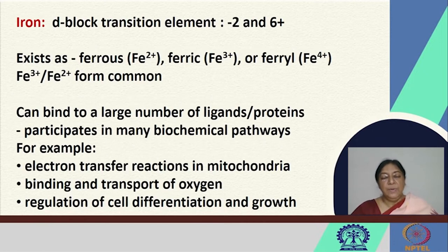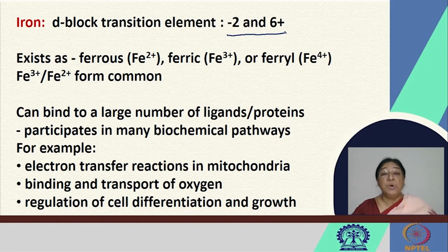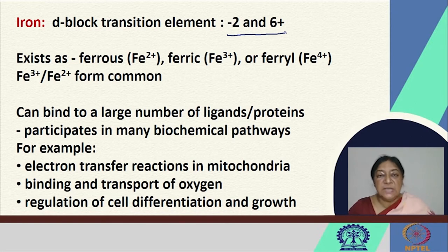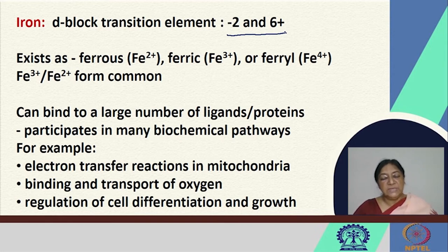Iron is a d-block transition metal and it has a large number of possible oxidation states. In the body, it exists as the ferrous Fe2+, the ferric Fe3+, or ferrile Fe4+. The Fe3+/Fe2+ combination is the most common. Iron can bind to a large number of ligands and proteins and as a result participates in many biochemical pathways.